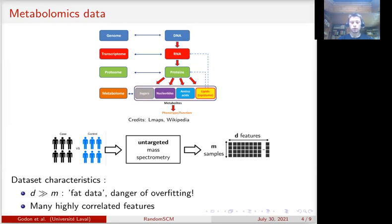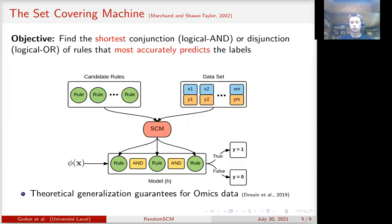One of such algorithms is the set covering machine. Here is a description of the set covering machine algorithm. It produces a conjunction of rules. Each rule is made of one feature and a threshold on the value of this feature.